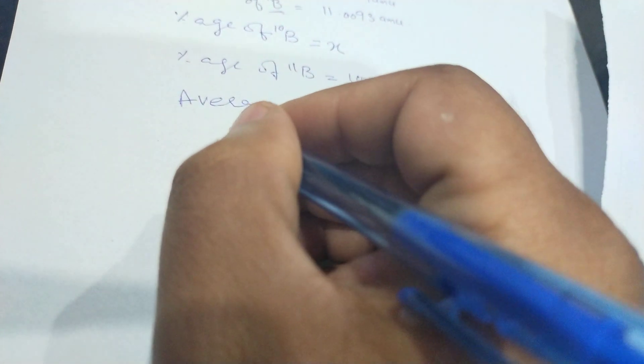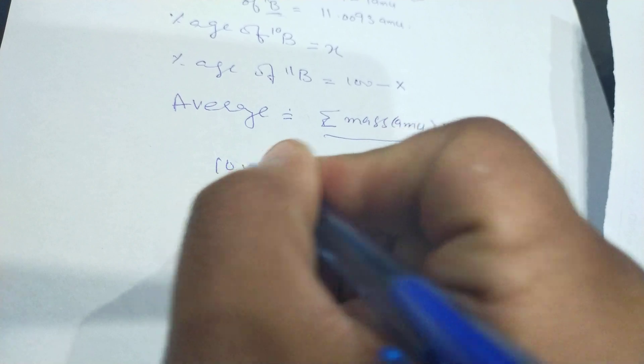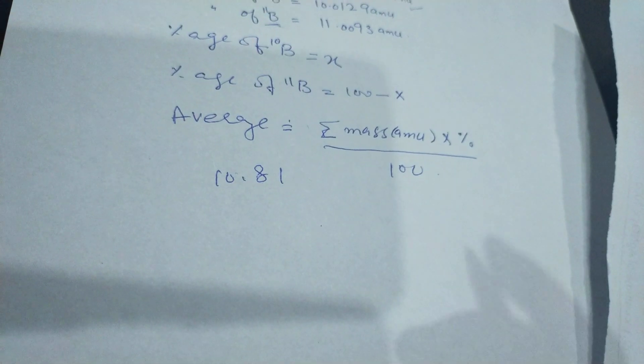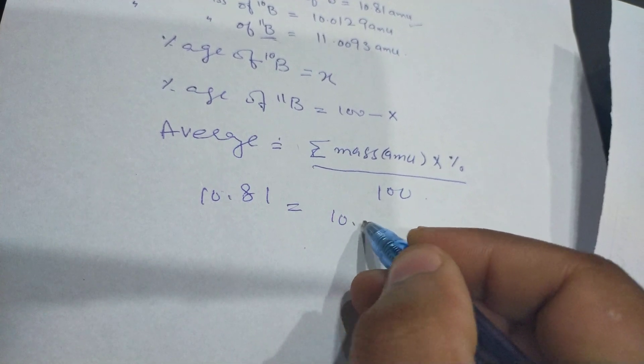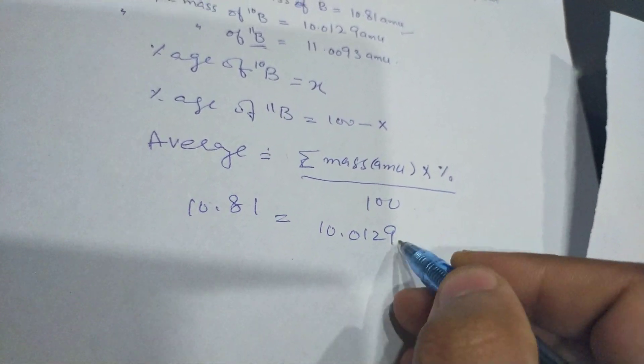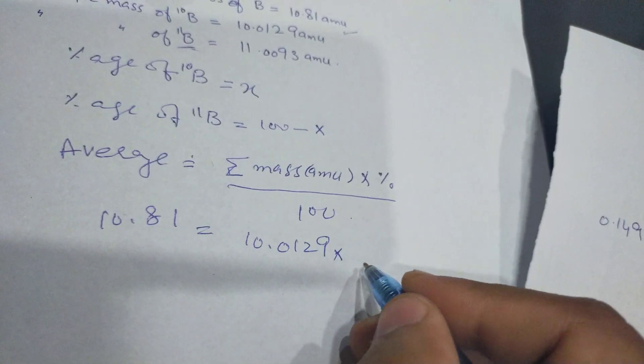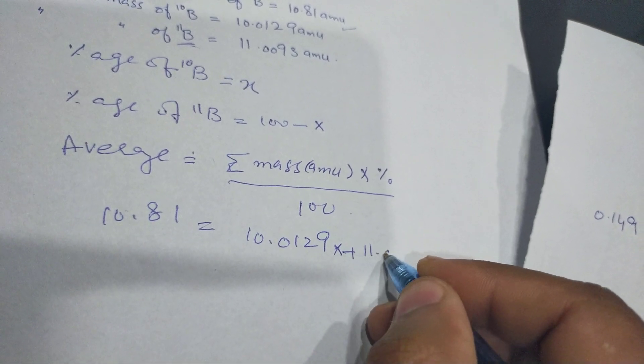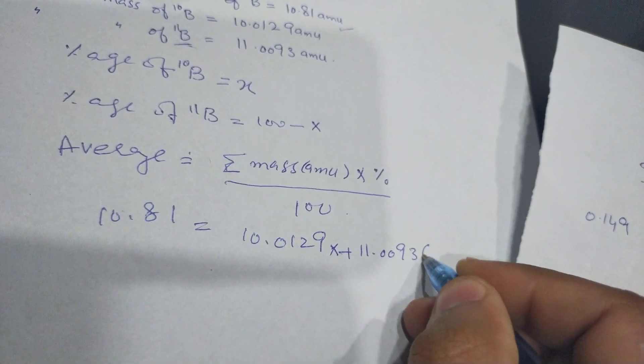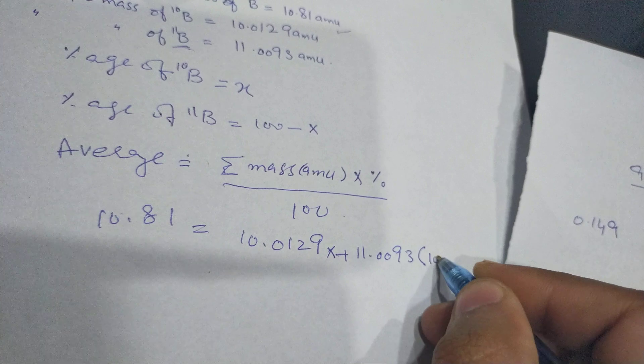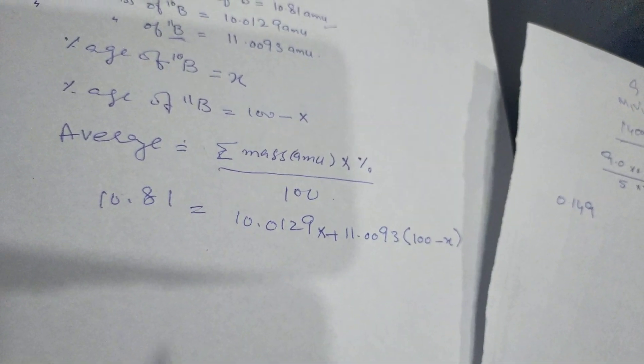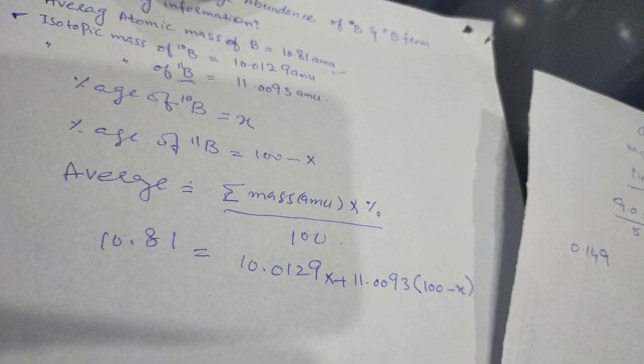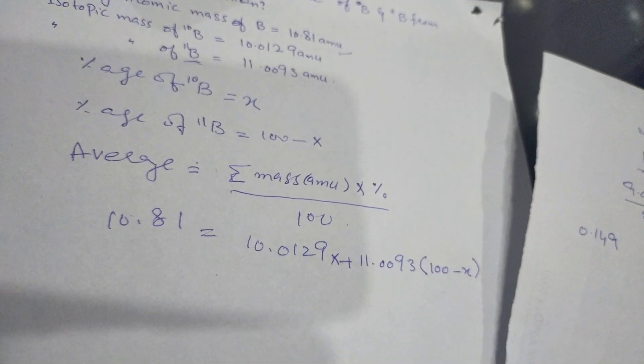Average Atomic Mass which is 10.81 is equal to 10.0129X plus 11.0093 times (100 minus X), which is the percentage of Boron-11 isotope, divided by 100.